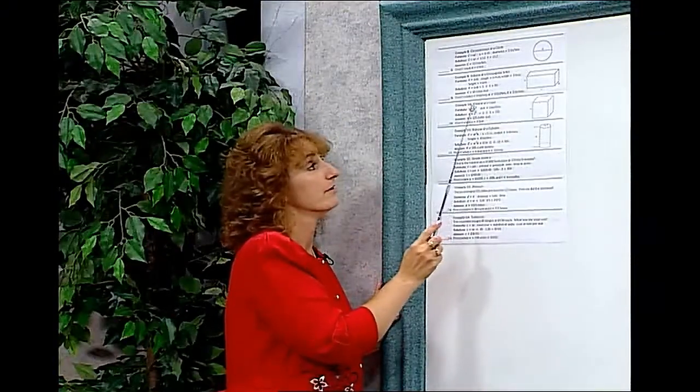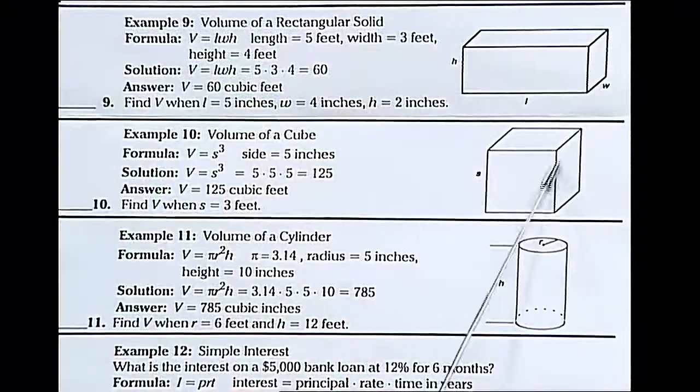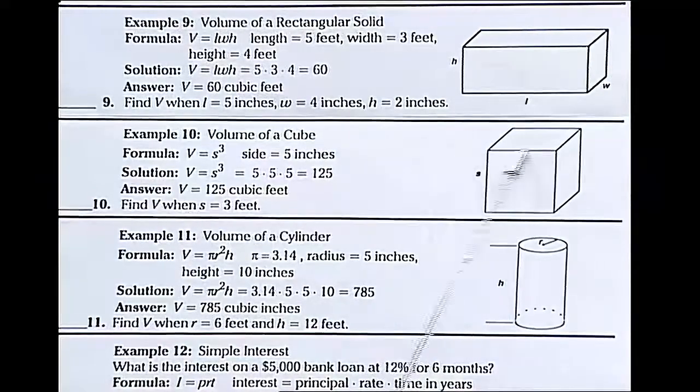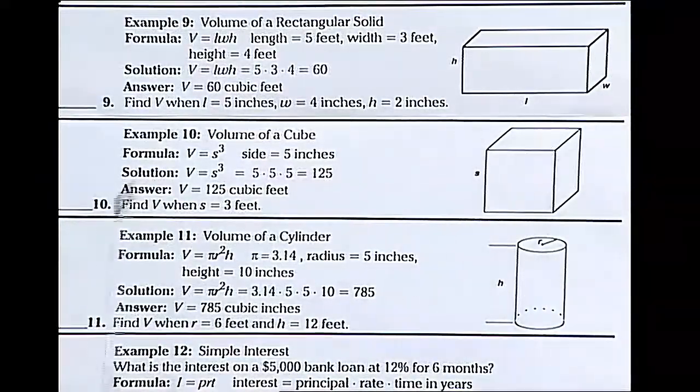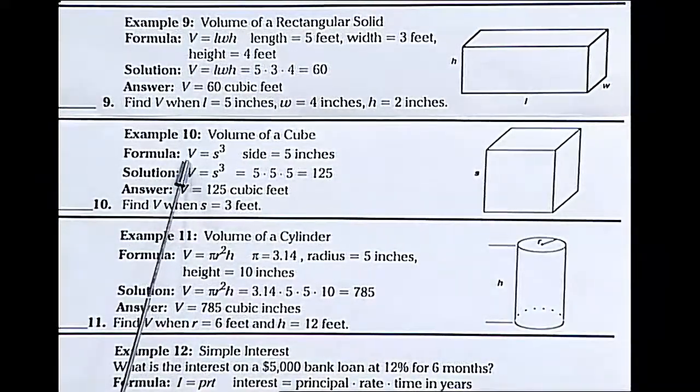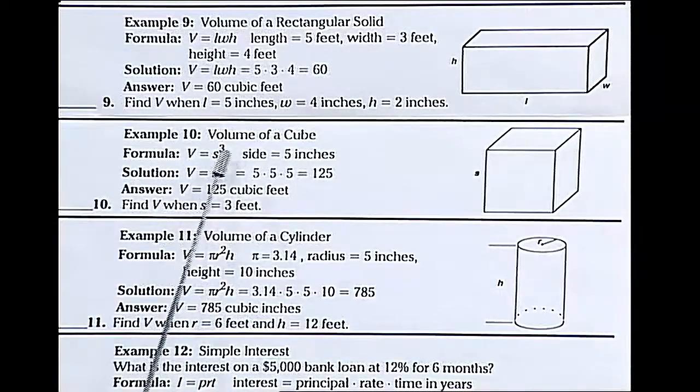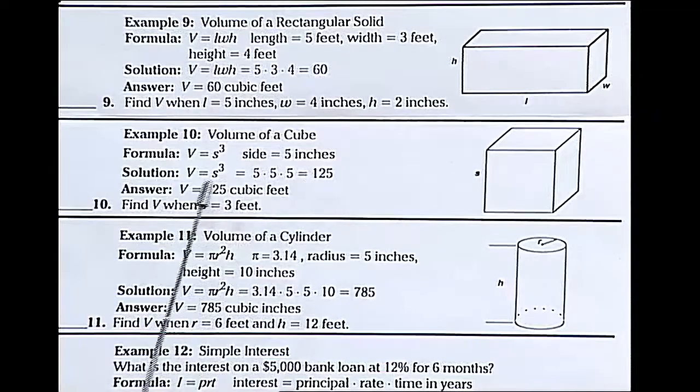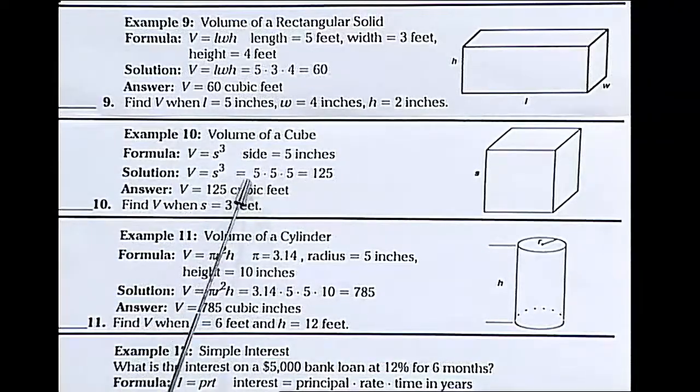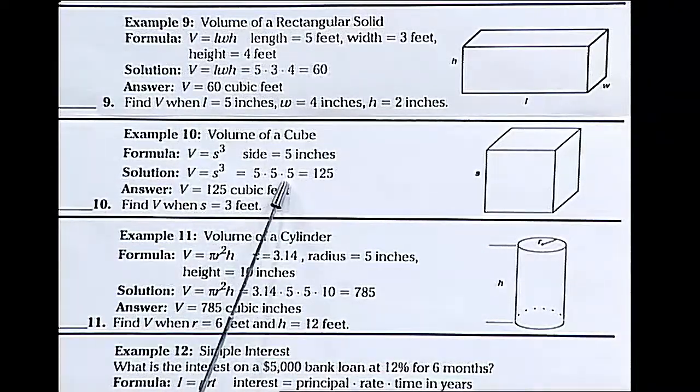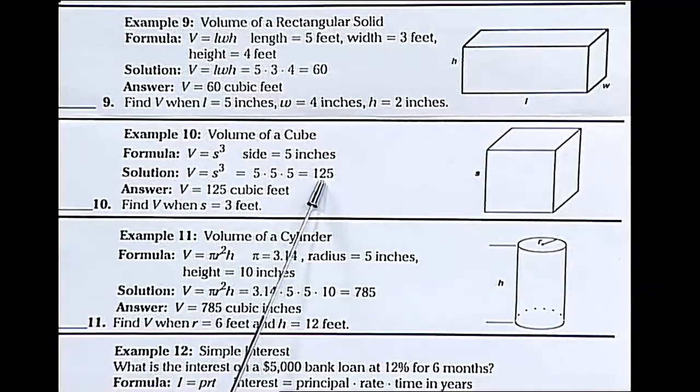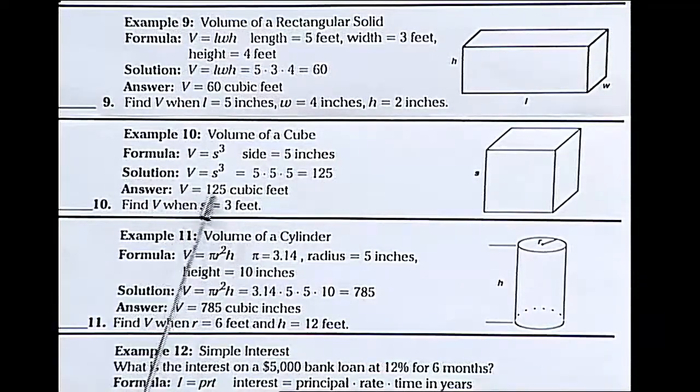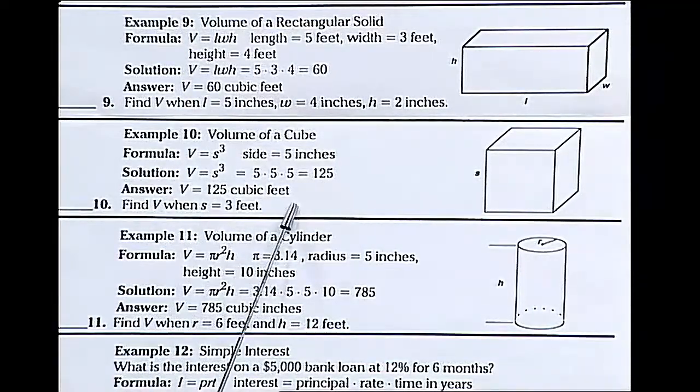Our cube, volume of a cube, is a rectangular solid with all the sides the exact same length. So we can say the volume equals side cubed. In this case, the side is 5 inches. So the volume is 5 times 5 times 5, which equals 125. The volume is 125 cubic feet.